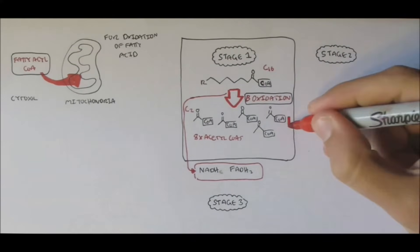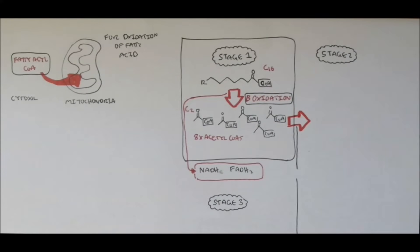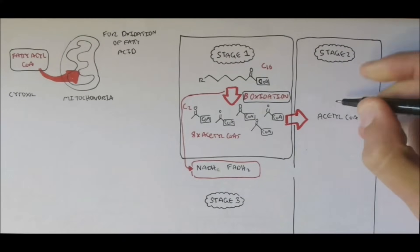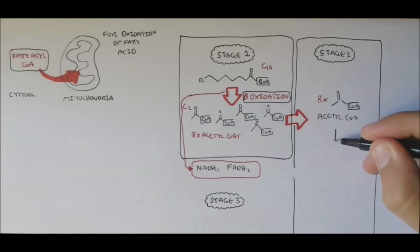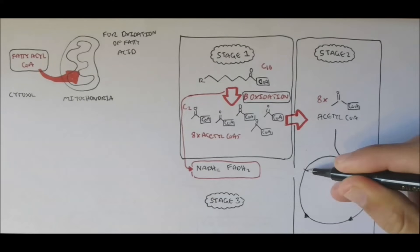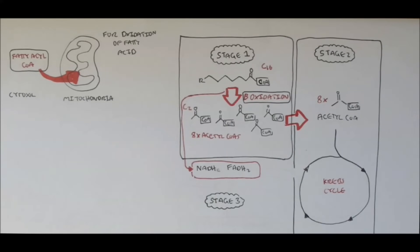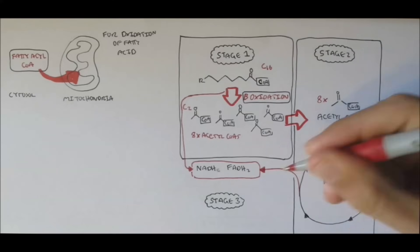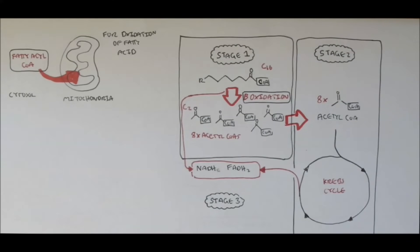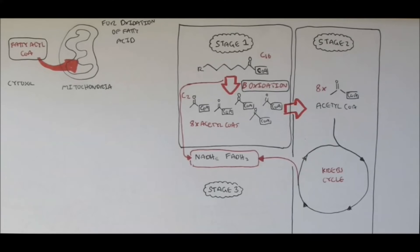Now, the 8 acetyl-CoAs can then go on to the next stage, stage 2, by entering the Krebs cycle. Because if you remember, acetyl-CoA enters the Krebs cycle from pyruvate. And from the Krebs cycle, NADH and FADH2 are also produced, which leads to the final stage, stage 3.